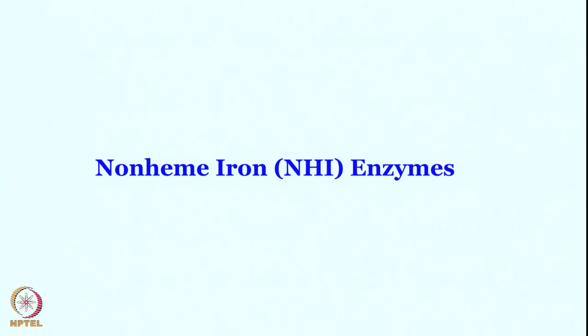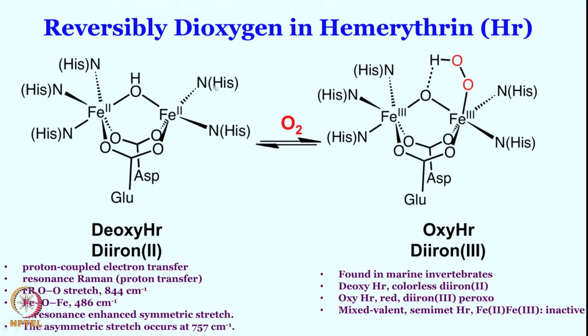Let us now look at the non-heme chemistry — another very fascinating avenue. So far we have seen at least one porphyrin in all cases: hemoglobin, myoglobin, cytochrome C oxidase, cytochrome P450, catalase, peroxidase — all of these have at least one heme center. Now we want to get rid of the heme center and use simple ligands such as histidine.